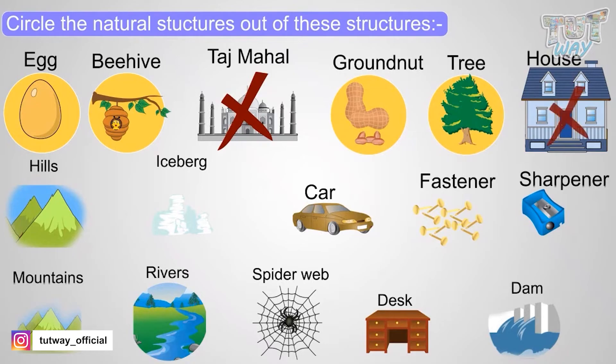House. No. Hills. Yes. Iceberg. Yes, a natural structure. Car. No, it's a man-made structure. Fastener. No. Sharpener. No.